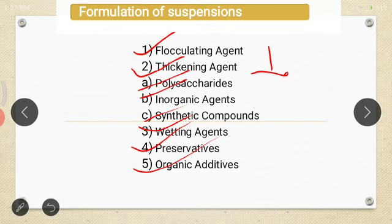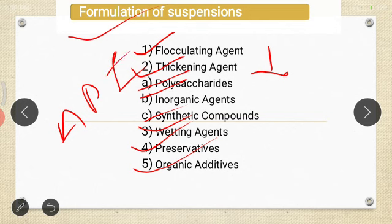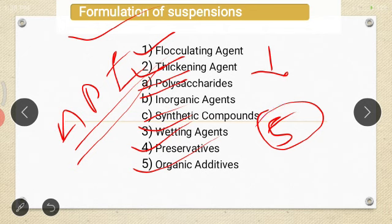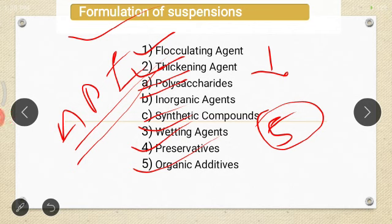Up to here we discuss the main points under the suspension, that is the formulation of suspension, which includes flocculating agents, thickening agents, wetting agents, preservatives, and organic additives. The most important part of the formulation is the API — active pharmaceutical ingredient. These are the additives used in the preparation or formulation of suspension.